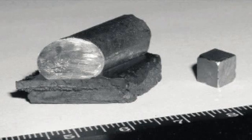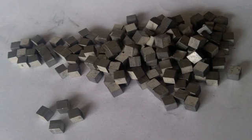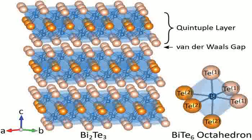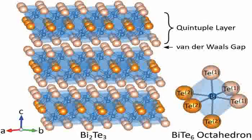Bismuth telluride, often represented by the formula Bi₂Te₃, is a compound of bismuth and tellurium. It is a gray or silvery material that typically takes the form of a brittle, plate-like crystal. Notably, it is a thermoelectric material, meaning it can generate an electric charge in response to a temperature difference across the material.